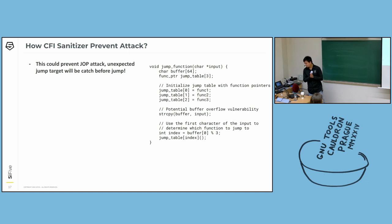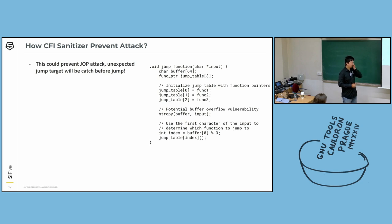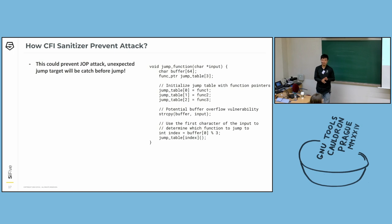How does the CFI sanitizer prevent attacks? The CFI sanitizer can prevent the attacks we showed earlier — the program will abort if the jump target is not what we expect, since the program tries to insert some checking before the call to make sure you are jumping to the expected one. So if the stack got overwritten and the jump address has been changed, it will abort soon since the program has inserted logic to check that it came from the expected place.